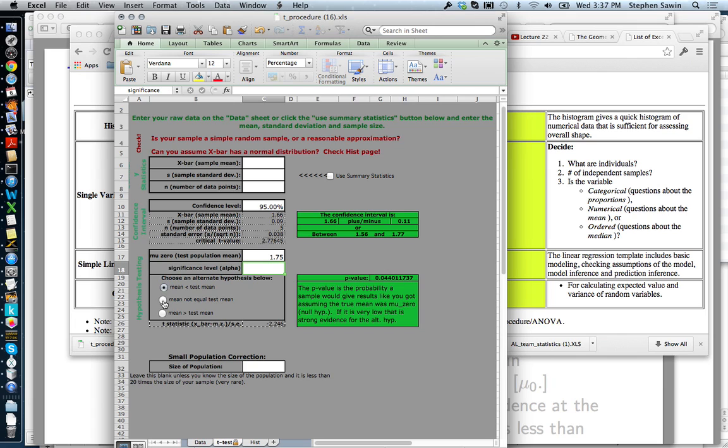And then we check. There are three choices, which are unfortunately in a different order from what I told you. Mean is less than the test mean, mean is different than the test mean, and mean is greater than the test mean. We're interested in the case the mean is less than the test mean. So we go over here, and we read off the p-value: 0.044.